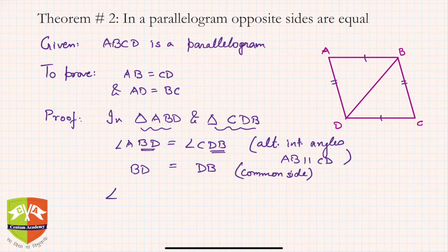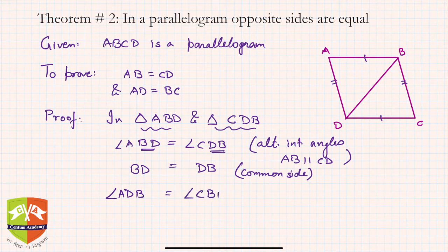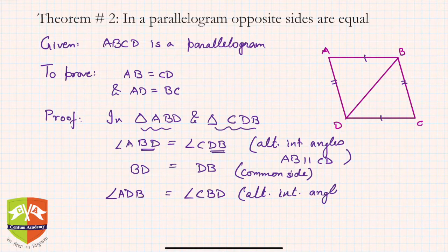And third one, angle ADB is equal to angle CBD. Why? Again, alternate interior angles, and what are the parallel sides? AD is parallel to BC because of the property of the parallelogram.